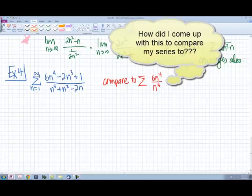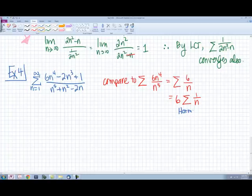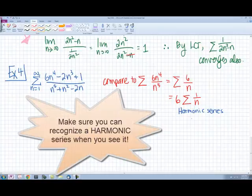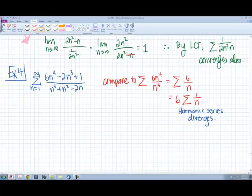which is going to be 6n to the 4th over n to the 5th. And then this simplifies nicely to 6 over n. I'm going to already say I know this is a P-series with P equals to 1, or I can say this is a harmonic series. Do you remember that from before? This is a harmonic series which diverges. That is your proof. In knowing just what the name of the series is, you can say it's a harmonic series, it diverges.